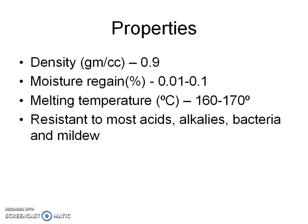Some of the important properties of polypropylene are: density of 0.9, making it the lightest material used as fiber; moisture regain of less than 0.1%; melting temperature in the range of 160 to 170 degrees C; and resistance to most acids and alkalis as well as bacteria and mildew.